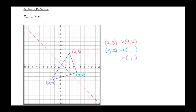Swap the coordinates of (4, -2) to get (-2, 4). 4 was positive, now it's negative. 2 was negative, now it's positive — giving us (2, -4). For the third vertex (-3, -4): switch the coordinates to get (-4, -3). 3 was negative, now it's positive. 4 was negative, now it's positive — giving us (4, 3).